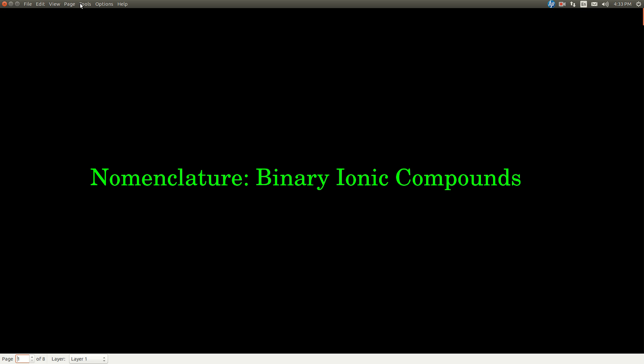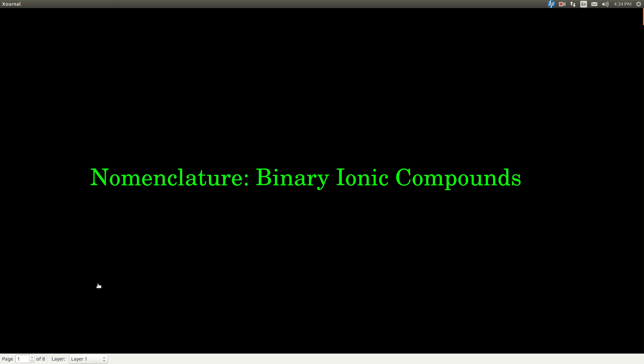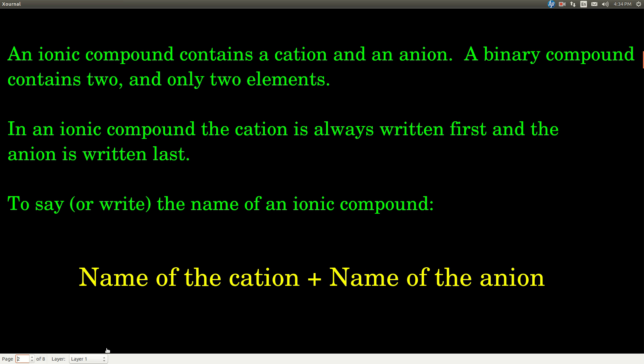In this video, we're going to talk about the nomenclature of binary ionic compounds. So what is a binary ionic compound? Ionic just means that it contains a cation and an anion. A binary compound contains two and only two elements. So a binary ionic compound is a compound that has a monatomic cation and a monatomic anion.